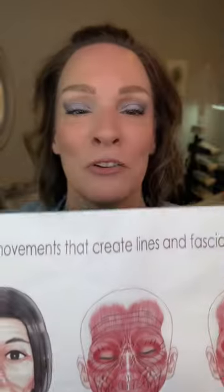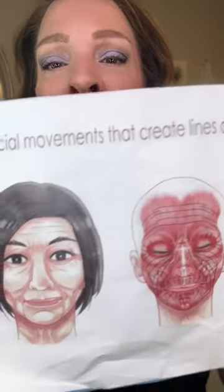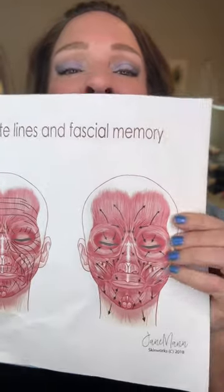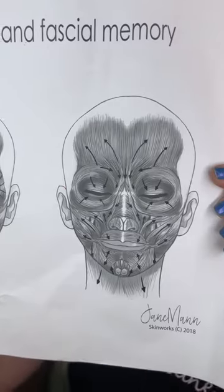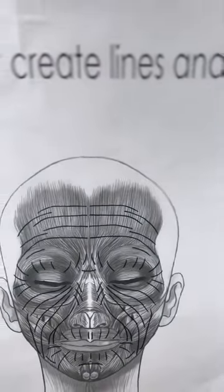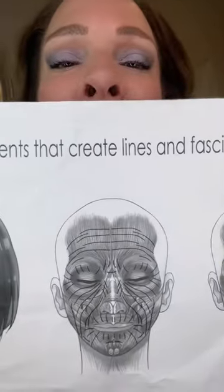Did you know that your fascia has fault lines? Those are lines that form on our face from repetitive facial expressions, and so over the years we go to this fascia memory. So this is what happens. How do we undo all that?